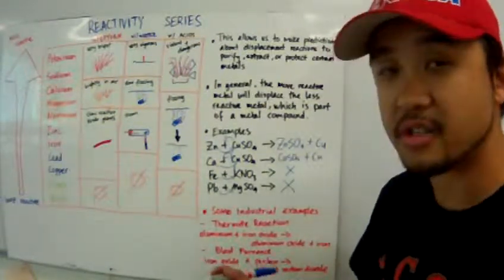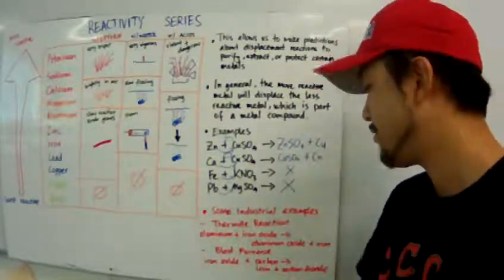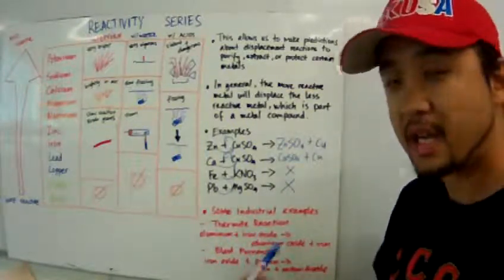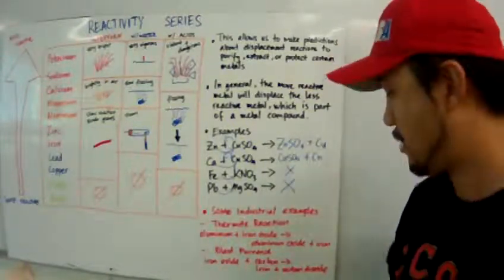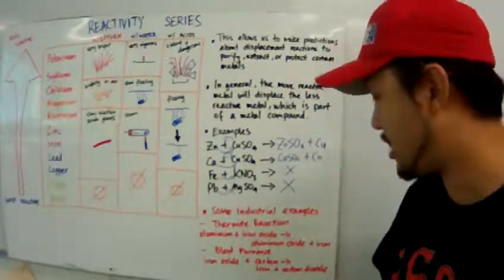A thermite reaction is very popular, especially during the railroad building days. When you have aluminum powder mixed with iron oxide, heat them up. What will happen is the aluminum will displace the iron out from the iron oxide,